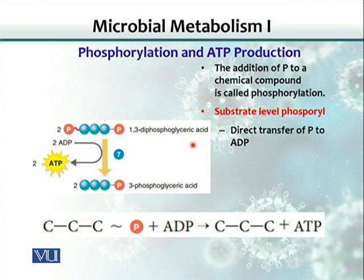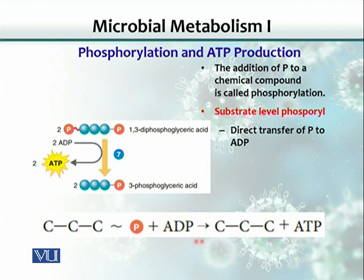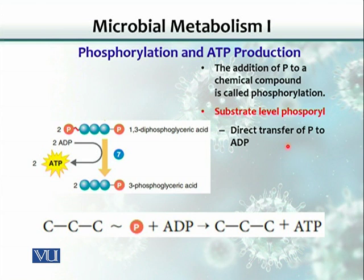For example, 1,3-diphosphoglyceric acid is converted to 3-phosphoglyceric acid. During this reaction, two ADP molecules are converted into two ATP molecules. The phosphate from the organic substrate is passed directly to ADP. Because this substrate is also a product feeding into subsequent reactions, this level of phosphorylation is called substrate-level phosphorylation.